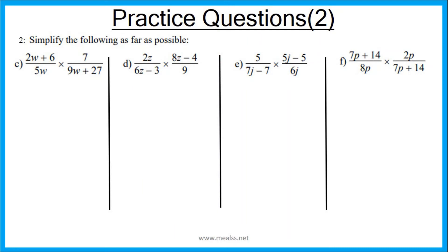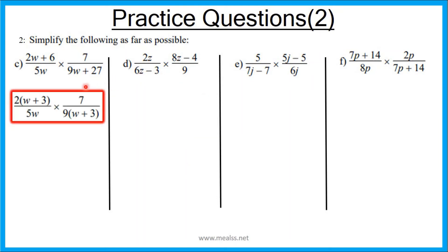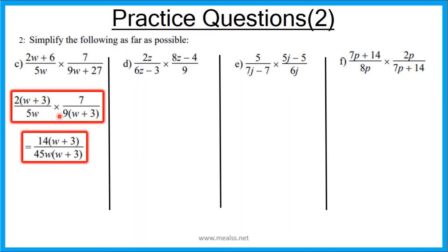Here are some practice questions. Use exactly the same method as the previous two examples — pause the video, have a go, and press play when ready to see the answers. For 2c: 2w plus 6 factorizes to 2(w plus 3), 9w plus 27 factorizes to 9(w plus 3). Multiplying gives 14(w plus 3) over 45w(w plus 3). Cancel w plus 3 from top and bottom, leaving a final answer of 14 over 45w.